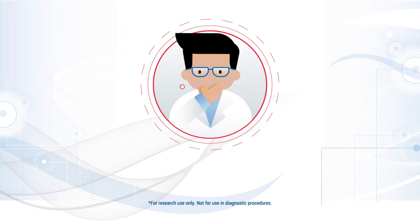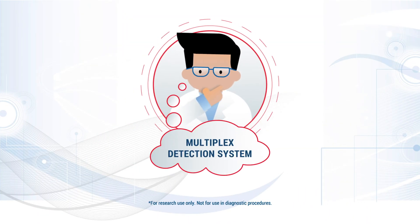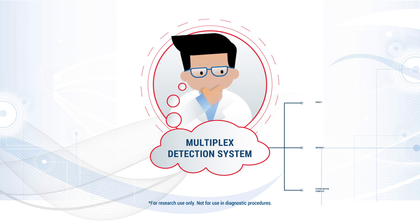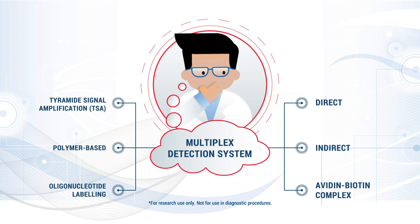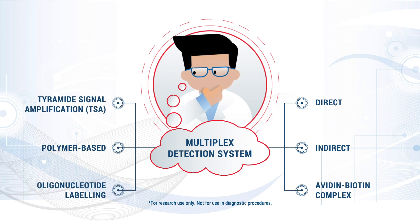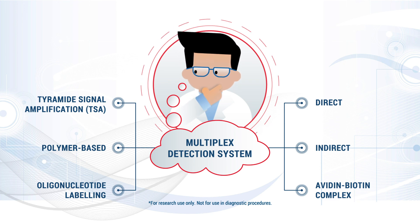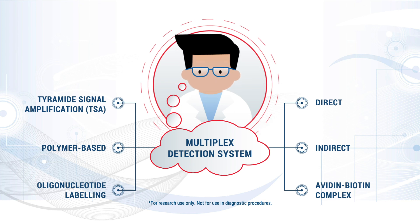In summary, there are several detection systems available to visualize multiplex staining: direct, indirect, ABC-based, polymer-based, and oligonucleotide-labeled primary antibodies with complementary probes. Just remember that whichever detection system you decide to use in your multiplex assays, optimization is vital.